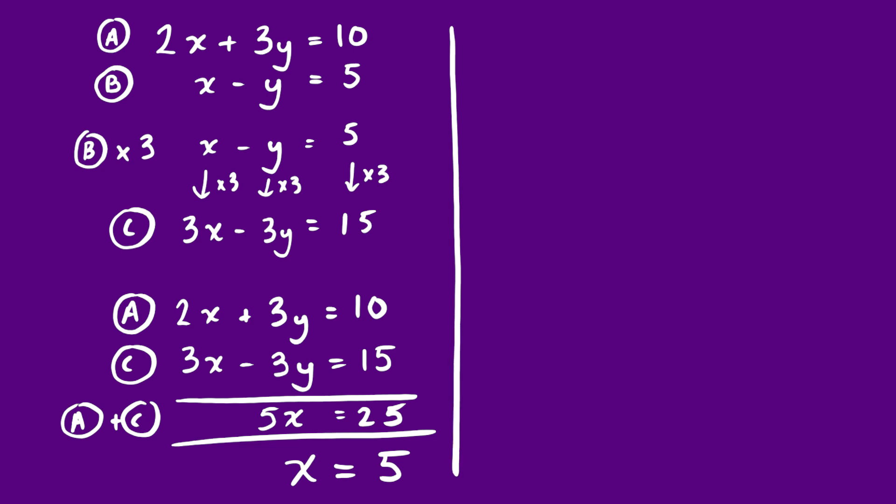Onto stage two: substitute x = 5 back into equation B. So 5 − y = 5. This is a bit unusual — y must be 0, since 5 − 0 = 5. Don't assume you've made a mistake if you get an answer of 0 or something unexpected. It's worth double-checking, but it doesn't necessarily mean you're wrong. I think this is correct: y = 0.